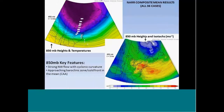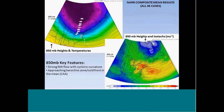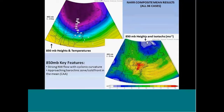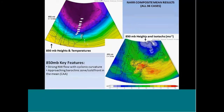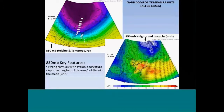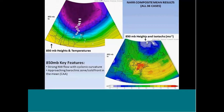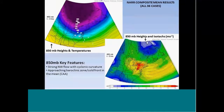At 850 millibars, not surprisingly, we see strong northwesterly flow with cyclonic curvature — pretty much true at all levels in the troposphere. We have an approaching baroclinic zone or cold front in the mean, with strong cold advection approaching from Ontario and Quebec across New York and New England. The strongest winds at 850 are just south of our forecast area.